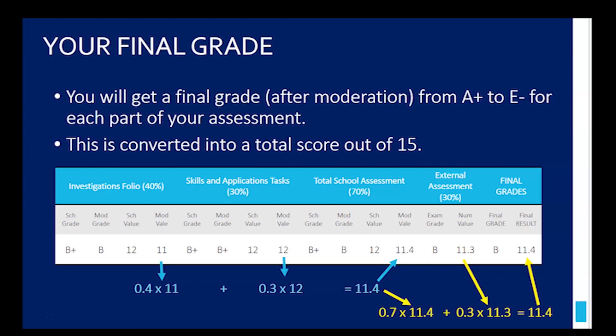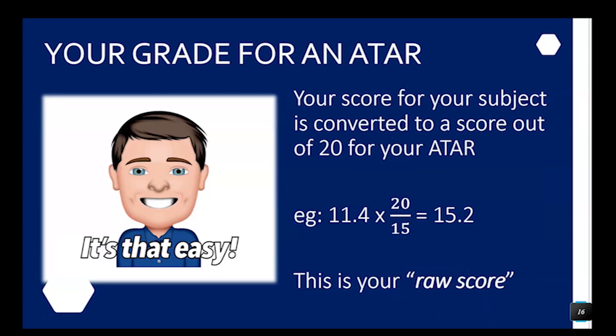So that's an example of how they get your final grade as a number value. But to use that for ATAR, they do something a little bit different again. For an ATAR, the score for your subject is then converted to a score out of 20. So to do that, all you've got to do is multiply that number you got, 11.4, times it by 20, divided by 15, and you get a value of 15.2. 15.2 out of 20 would be the score for your subject. We call that a raw score.